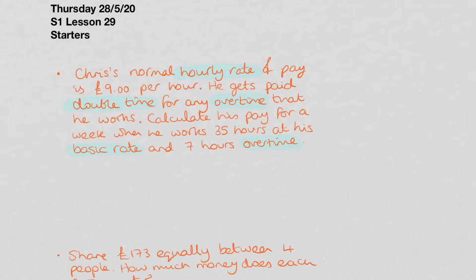So calculate his pay for a week when he works 35 hours at his basic rate and seven hours overtime. So we've got basic is 35 hours. Overtime is seven hours. Now his basic rate of pay we've found here is £9 an hour. So for his basic pay, we'll be working out 35 times £9.